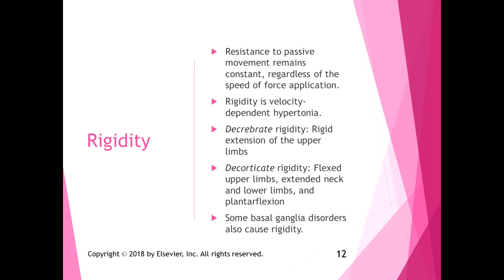Look at those pictures in the text to see the difference between the two. Some basal ganglia disorders also cause rigidity — rigidity is one of the cardinal signs of Parkinson's disease, which is a basal ganglia disorder. With Parkinson's, it's neither decorticate nor decerebrate rigidity; it's overall generalized muscle rigidity.